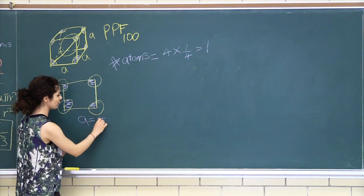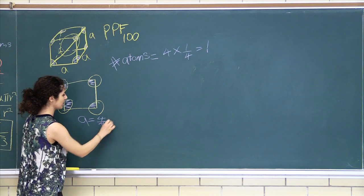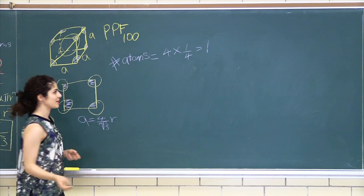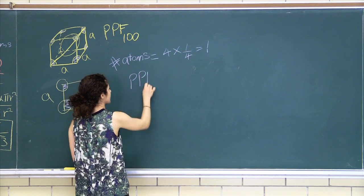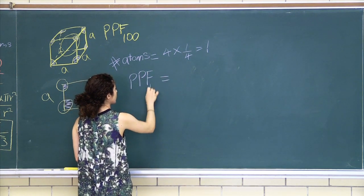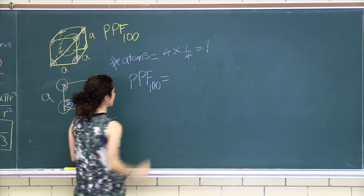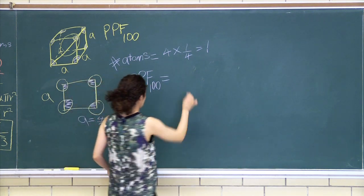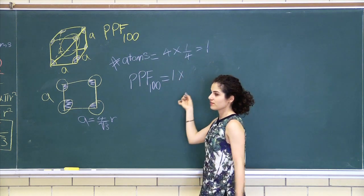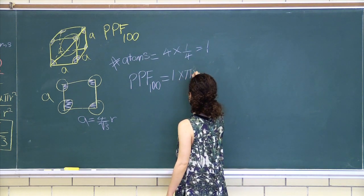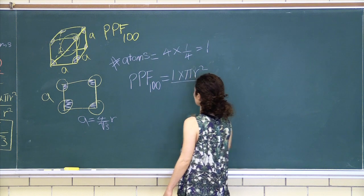...is four over root three R, which I suggest you guys memorize. So the planar packing factor for the 100 plane is one times the area of an atom, so pi r squared, all over the area...